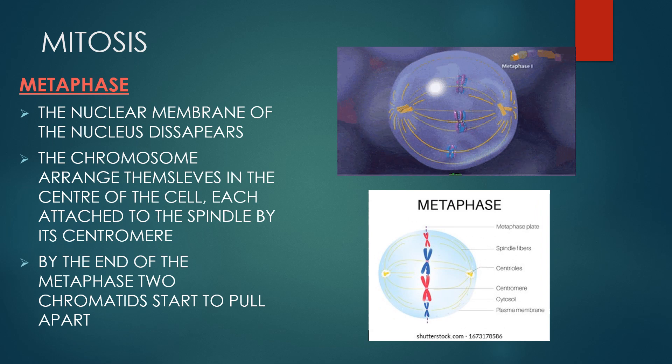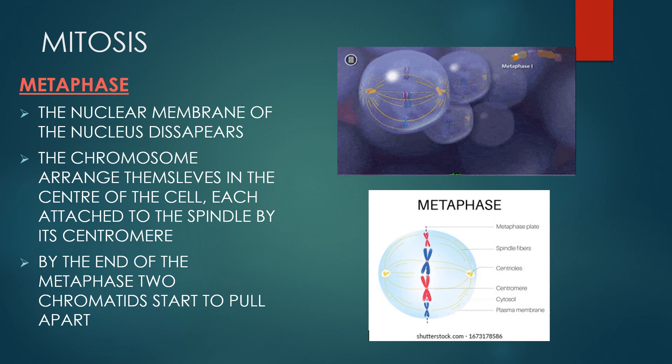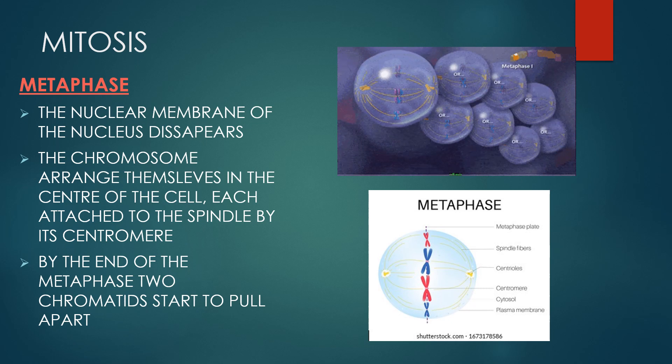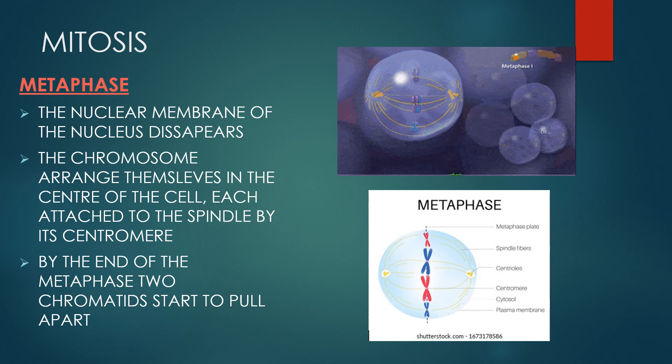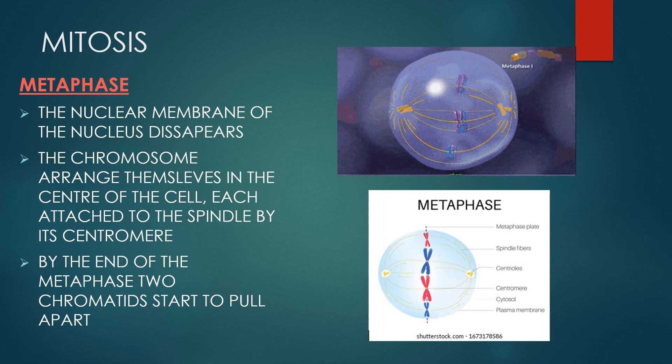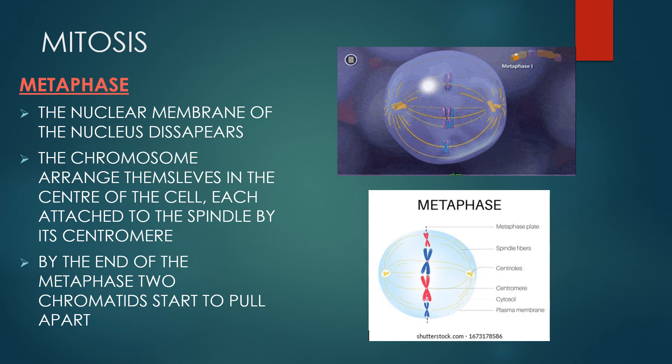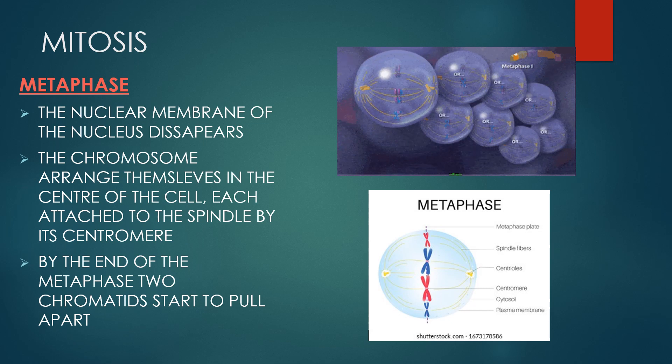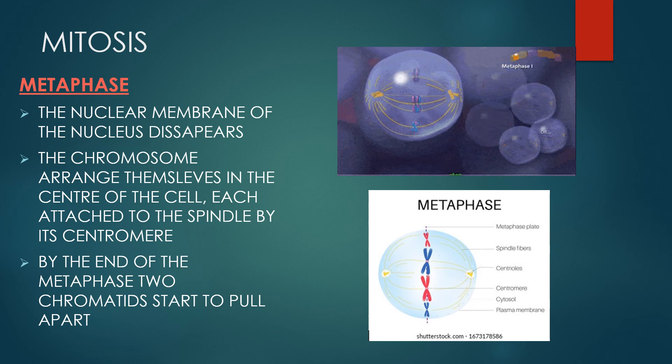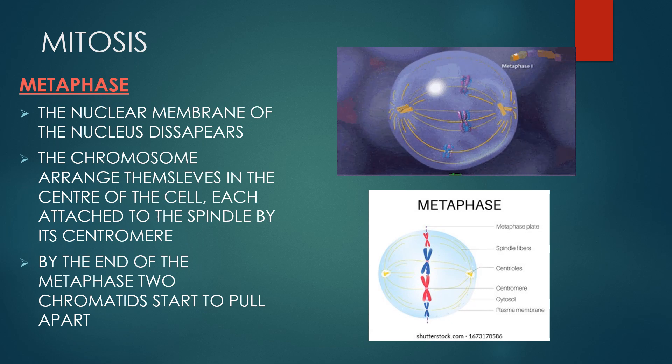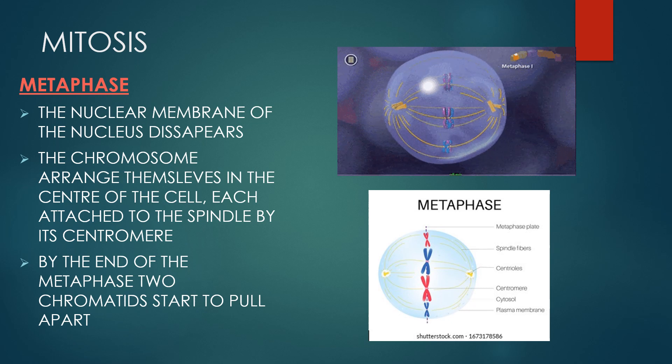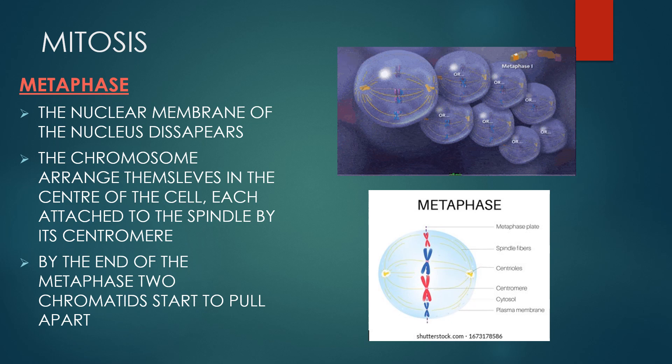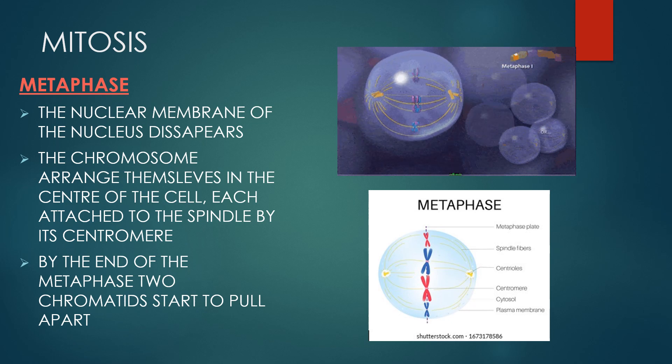During metaphase, the cell's chromosomes align themselves in the middle of the cell through a type of cellular tug of war. The chromosomes, which have been replicated and remain joined at a central point called a centromere are called sister chromatids. The nucleus membrane disappears. The chromosomes arrange themselves in the center of the cell, each attached to the spindle by the centromere. By the end of metaphase, two chromatids start to pull apart.